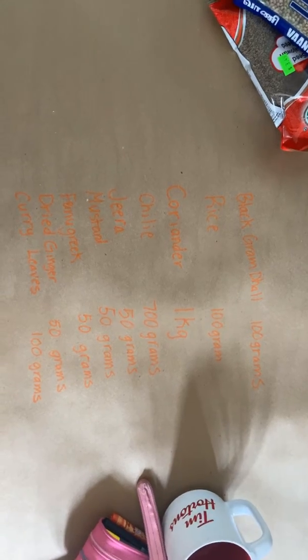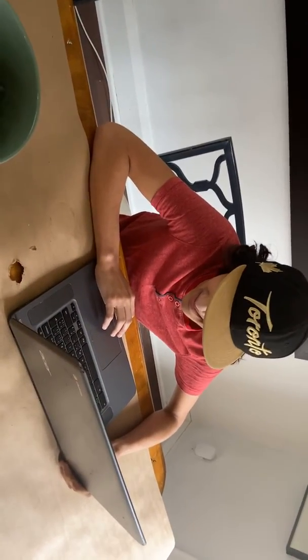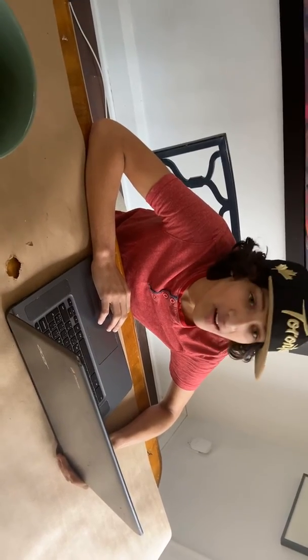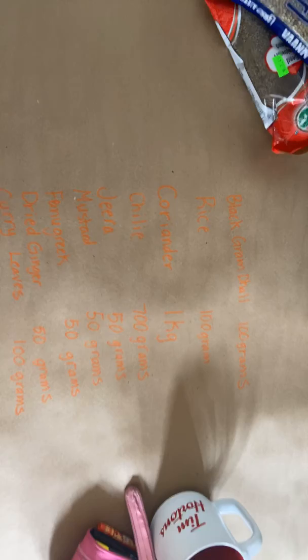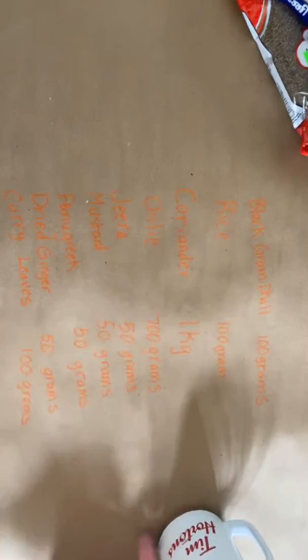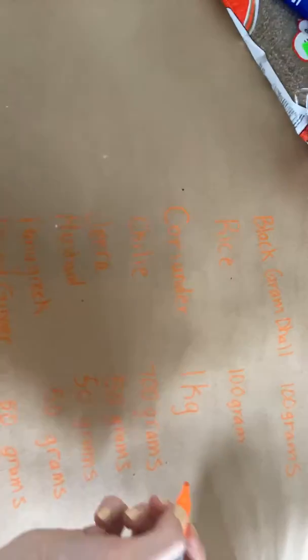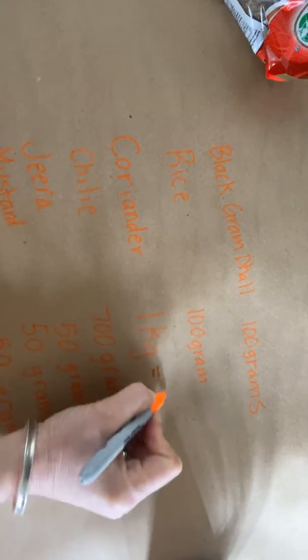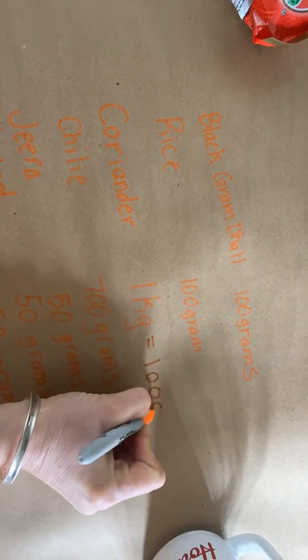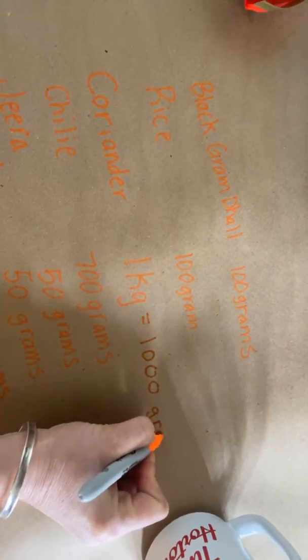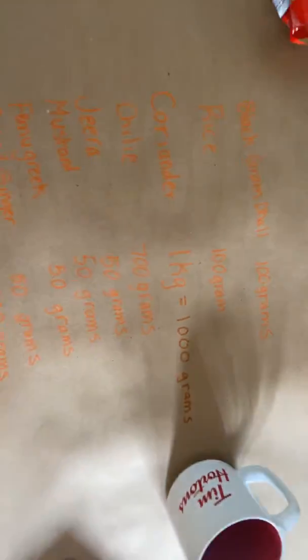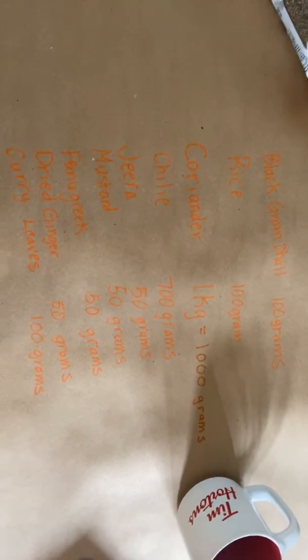Isaac Thangraj, can you tell me — if I wanted one kilogram of coriander, how many grams is that? One thousand. Okay, one thousand. So I'm going to change this one kilogram to one thousand grams — I just need to find my marker. Here it is. I'm going to change this one kilogram to one thousand grams, so at least now they're all in the same units.